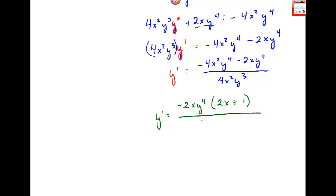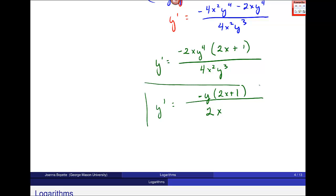When I look at this, the 2 will cancel with the 4 and leave me a 2 in the denominator. This x will cancel one of these x's in the denominator and leave me with 1. And the y⁴ will leave me with no y's in the denominator—or you can also think about these as exponent rules. I should get negative y(2x plus 1) over 2x. So it's significantly simpler once you simplify this. Let me know if you have questions.